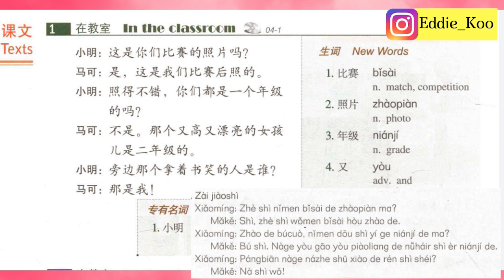这是你们比赛的照片吗？Is this the photo of your match? 是。这是我们比赛后照的。Yes, it's taken after the match. 照得不错。Not bad. 你们都是一个年级的吗？Are you all in the same grade? 不是。那个又高又漂亮的女孩是二年级的。Nope. That tall and beautiful girl is from grade 2. 旁边那个拿着书笑的人是谁？Who is the person beside her holding a book and laughing? 那是我。That's me.